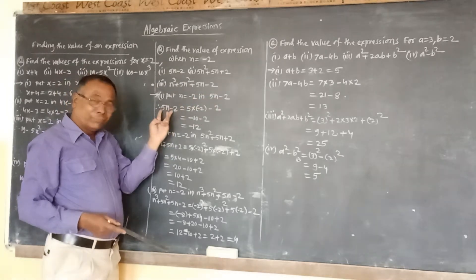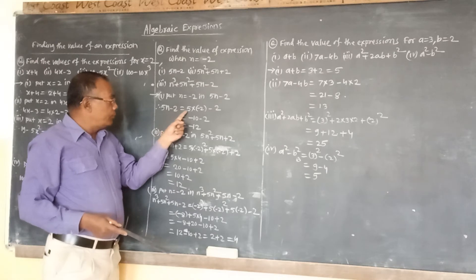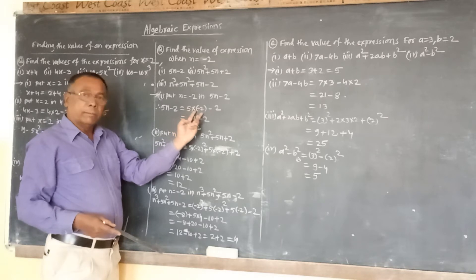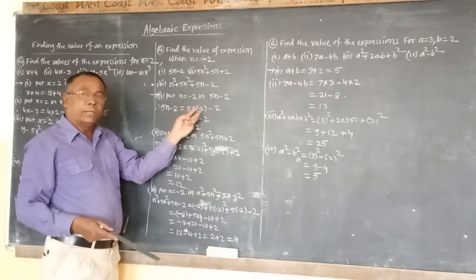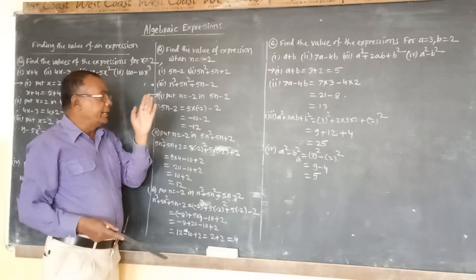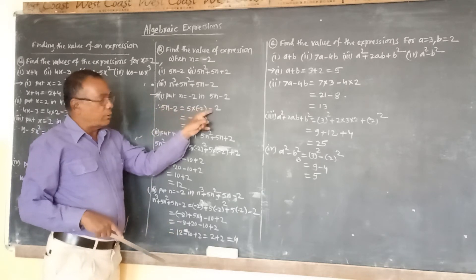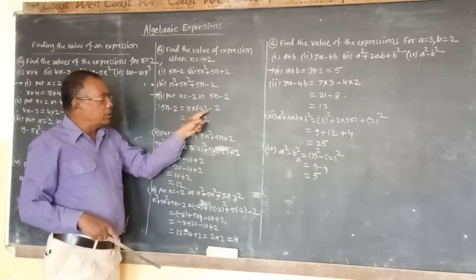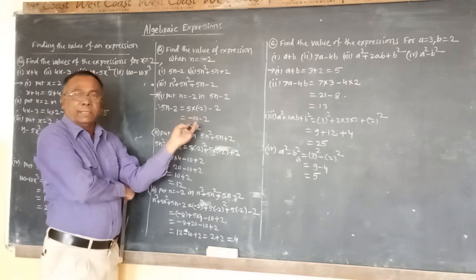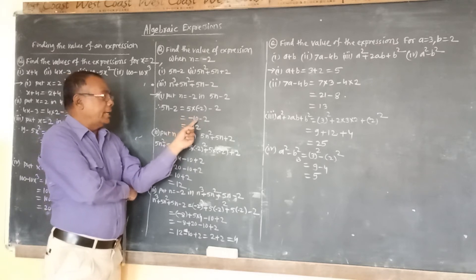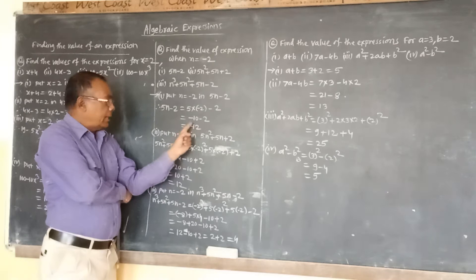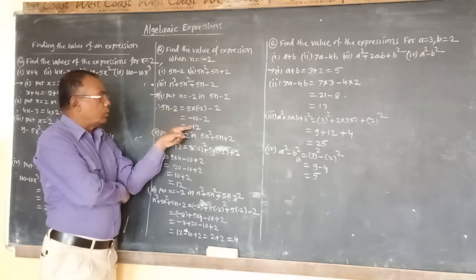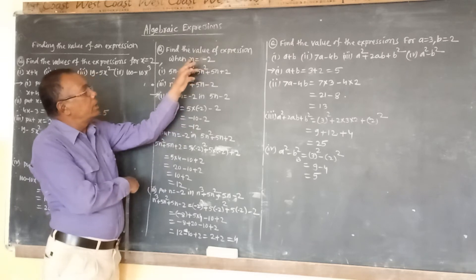Put n equal to minus 2 in the first expression 6n minus 2. Therefore 6n minus 2 becomes 6 into minus 2, written in brackets because it is a negative value. 6 into minus 2 is minus 12. Both numbers have the same sign, so we add to get 12 and give it the negative sign. So 6n minus 2 equals minus 12 when n equals minus 2.